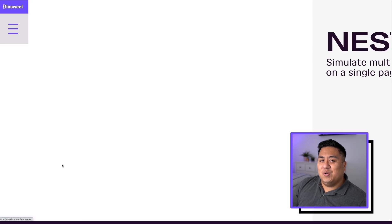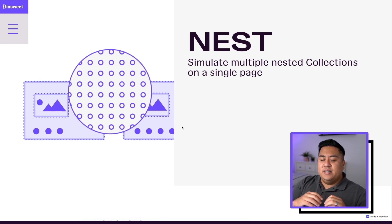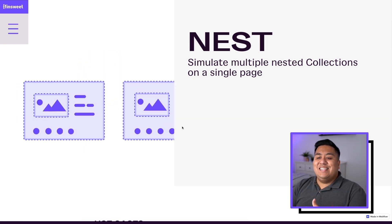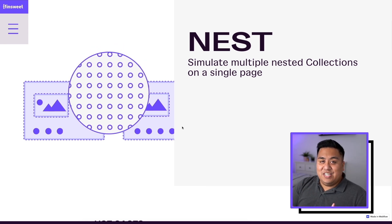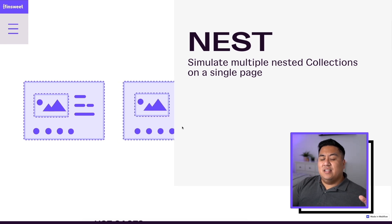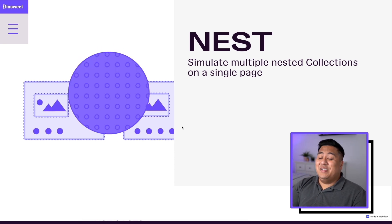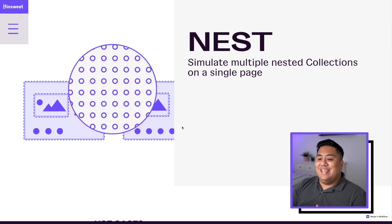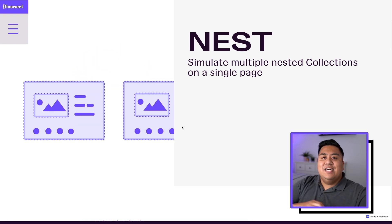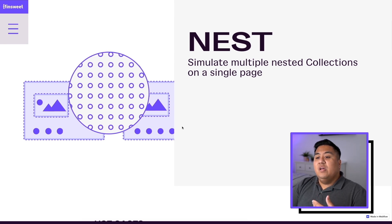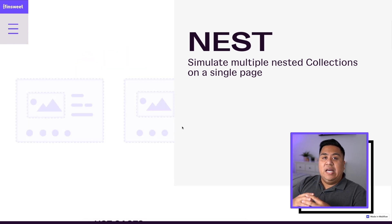The next tool is called Nest. Nest allows you to simulate multiple nested collections on a single page. Right now, Webflow only allows one nested collection per page. With the Nest tool, you're able to add even more nested collections — essentially a collection within a collection. For an e-commerce store, you could have a product with different colors and sizes, or nest multiple collections together. Each of these tools will be covered in detail so you can learn how to use and install them.